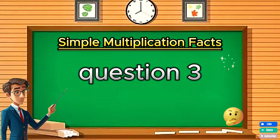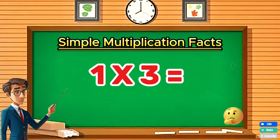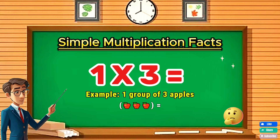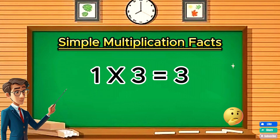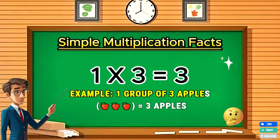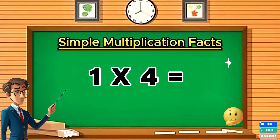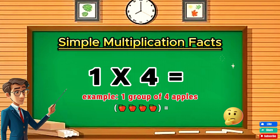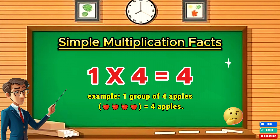Question three: One times three equals three. Question four: One times four equals four.